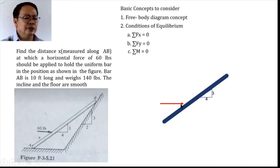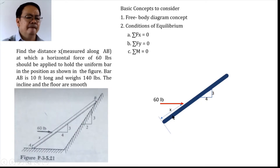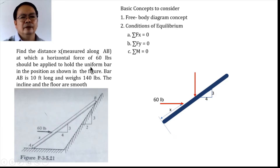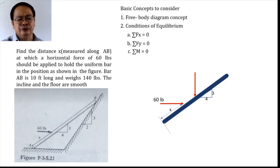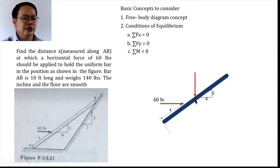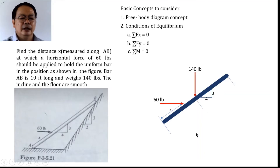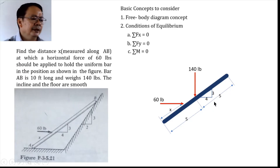We have the 60-pound force acting at distance x from the bottom measured along the member, and this is what we shall be looking for. The bar is uniform, which means the weight of 140 pounds acts at its geometric center — that is, at 5 feet from the bottom or 5 feet from the top.